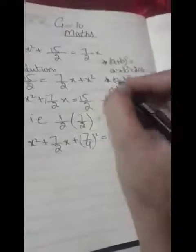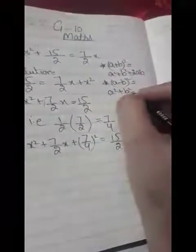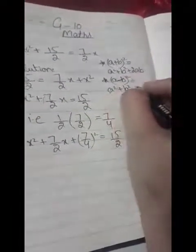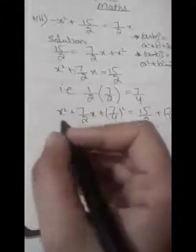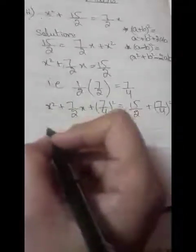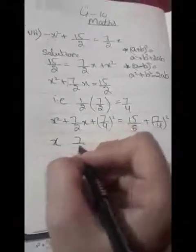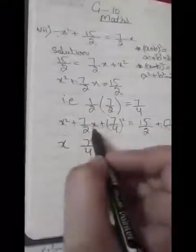The first value is a, then minus if the middle term is minus. The first value here is x and the second value is 7/4, with a plus sign.